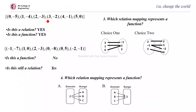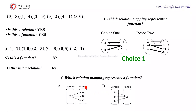Given the ordered pairs (0,-5), (1,-4), etc.: each domain element appears only once, so it is a function. For another set where element 1 or 0 has more than one image, it is not a function, though it is a relation. Which relation mapping represents a function? In the first choice, 1 is related to -1 — each element has one image, so it is a function. In the second choice, -1 has more than one image, so it is not a function. In another mapping, one element has multiple images so it is not a function, whereas in option B all elements have exactly one image, so the answer is B.